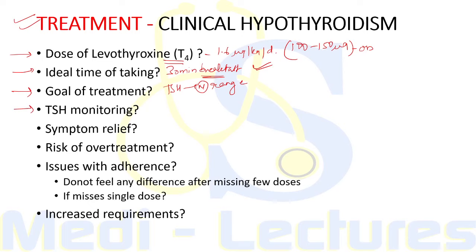TSH responses are gradual and should be measured around two months after initiating treatment or any subsequent change in levothyroxine dosage. Clinical effects are slow to appear and usually take three to six months after normalization of TSH, so symptomatic relief occurs three to six months after TSH normalization, not after initiation of treatment.